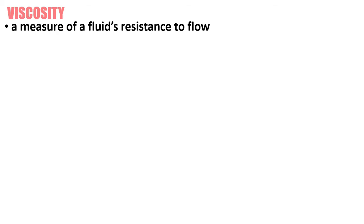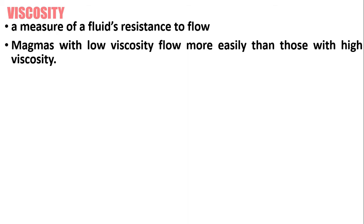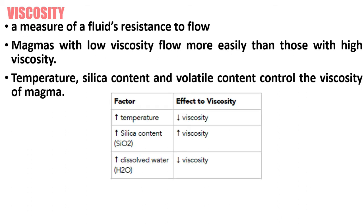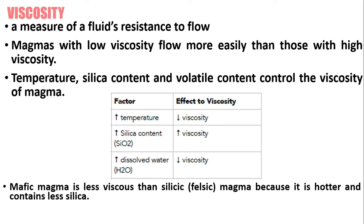Another factor that affects magma behavior is viscosity. Viscosity is the measure of a fluid's resistance to flow. Magmas with low viscosity flow more easily than those with high viscosity. Temperature, silica content, and volatile content control the viscosity of the magma. This table shows the relationship between these factors and viscosity. Mafic magma is less viscous than silicic magma because it's hotter and contains less silica. The higher the temperature, the lower the viscosity. Temperature and viscosity have an inverse relationship, while silica content and viscosity have a direct relationship.